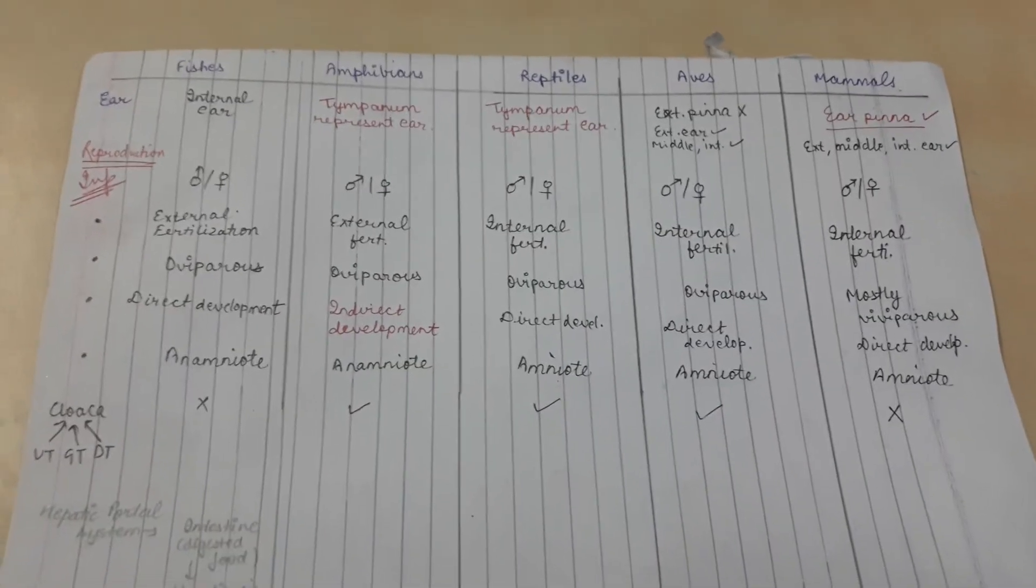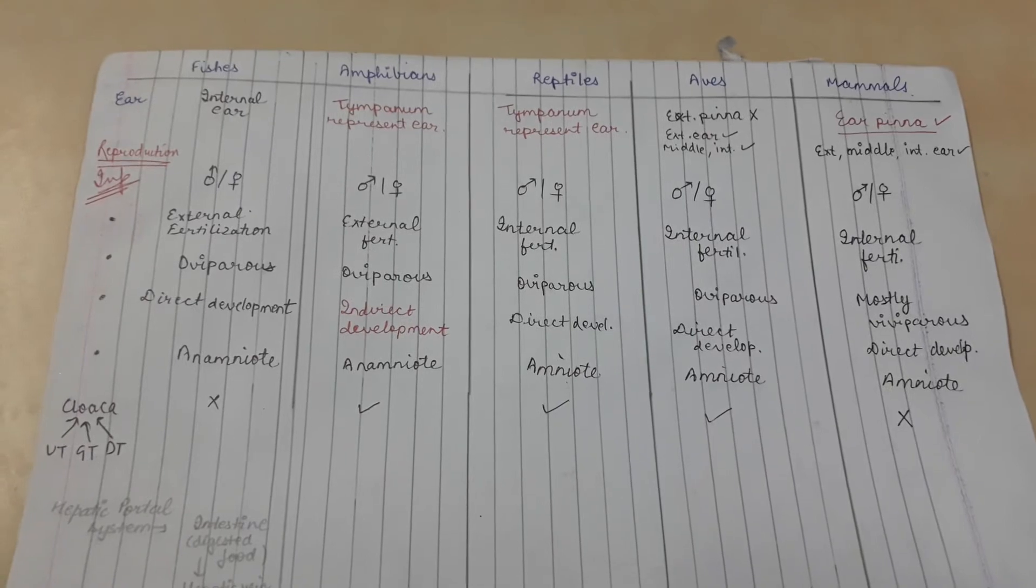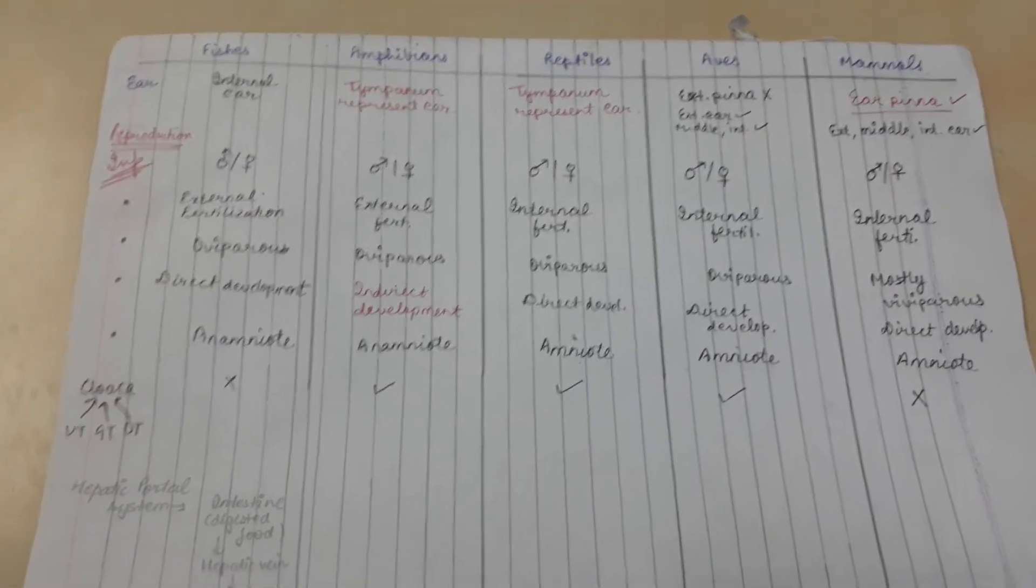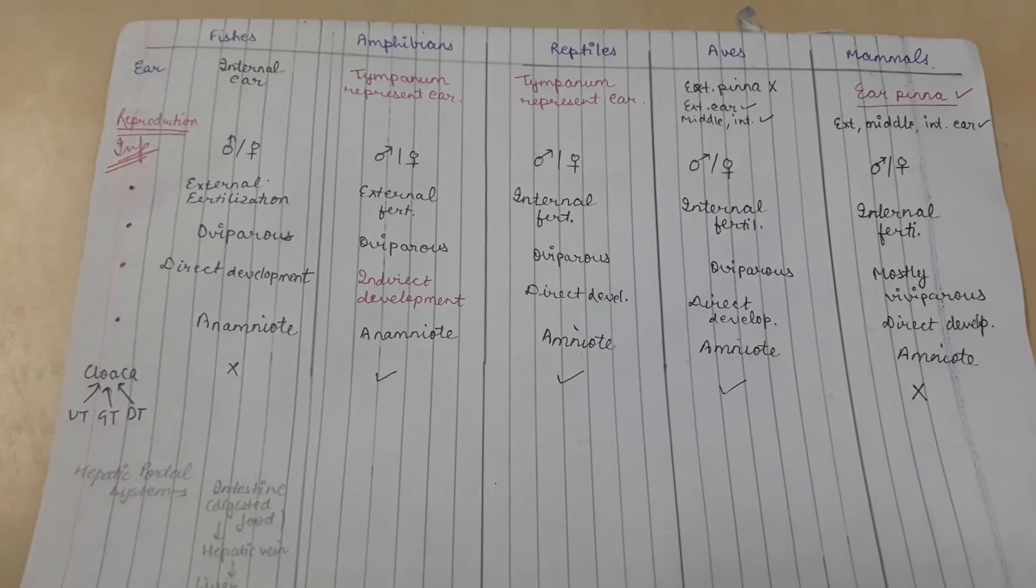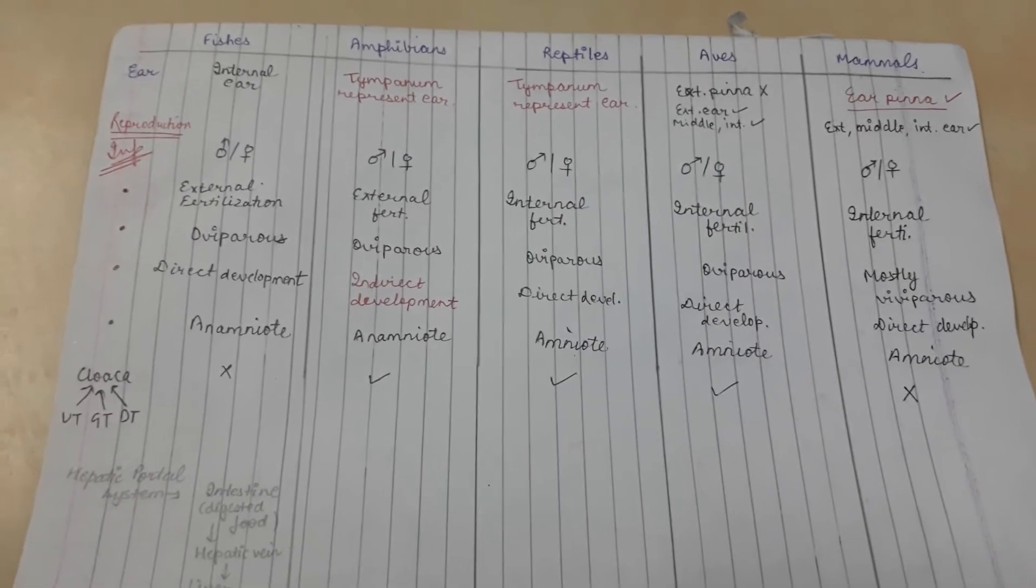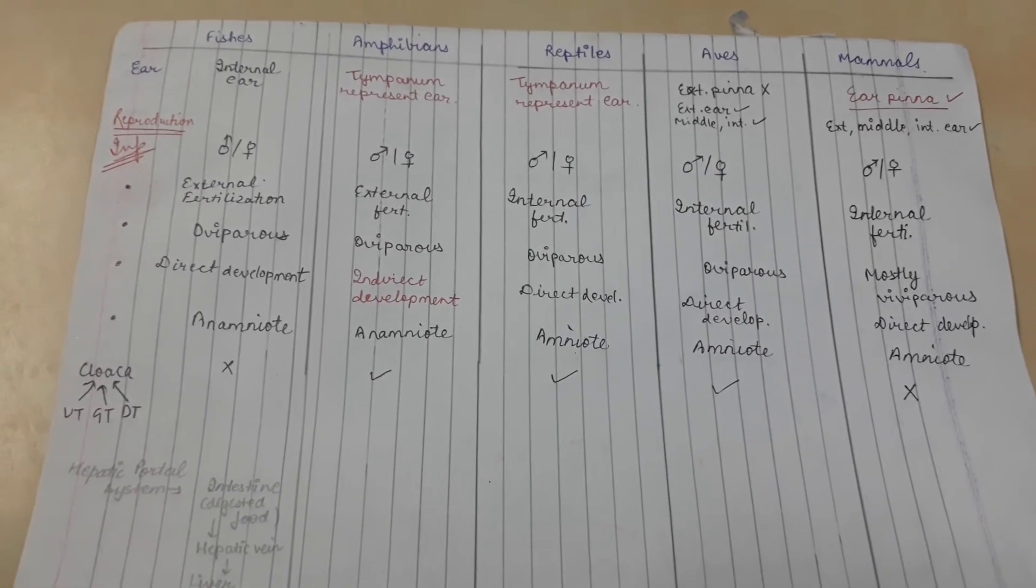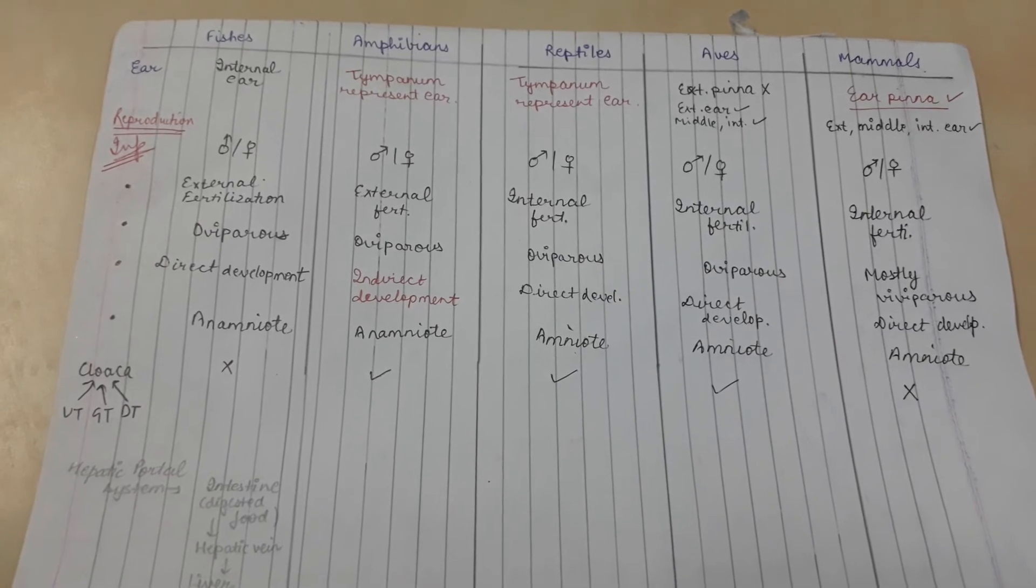About the ear: in amphibians and reptiles, the tympanum represents the ear. Tympanum is part of the middle ear and is also known as ear membrane. Mammals possess ear pinna, which we also know is a vestigial part.